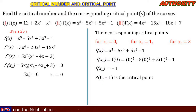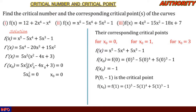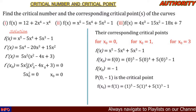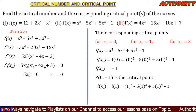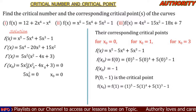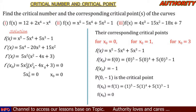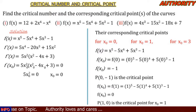For x₀ = 1: f(1) = (1)⁵ - 5(1)⁴ + 5(1)³ - 1 = 1 - 5 + 5 - 1 = 0. So the critical point P(1, 0) corresponds to x₀ = 1.